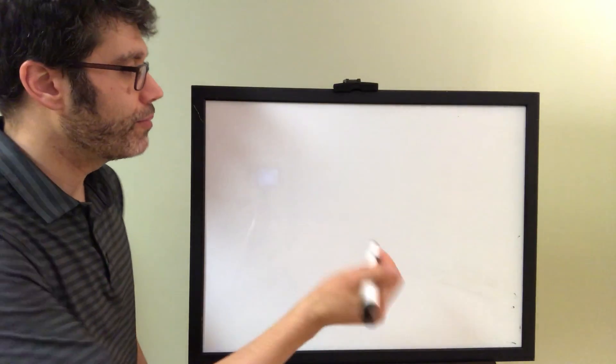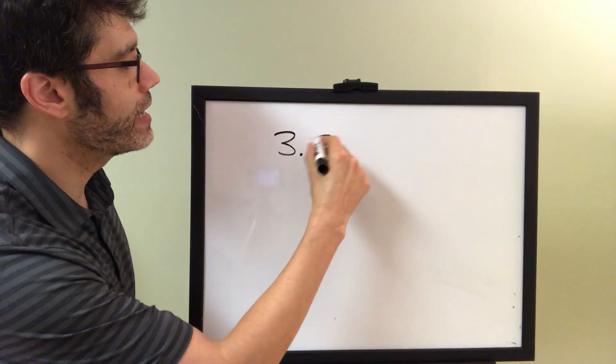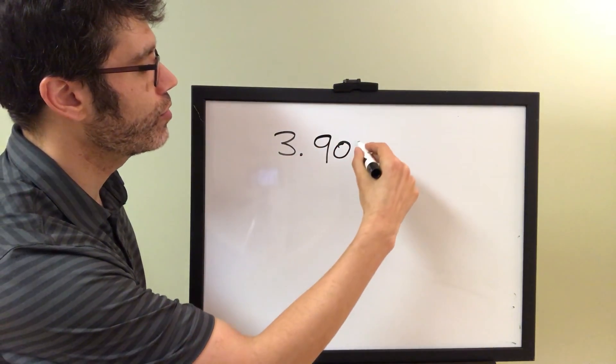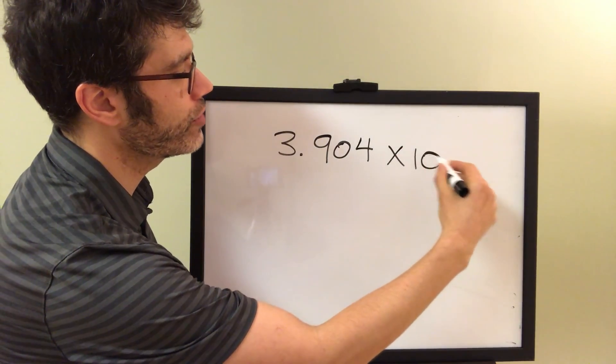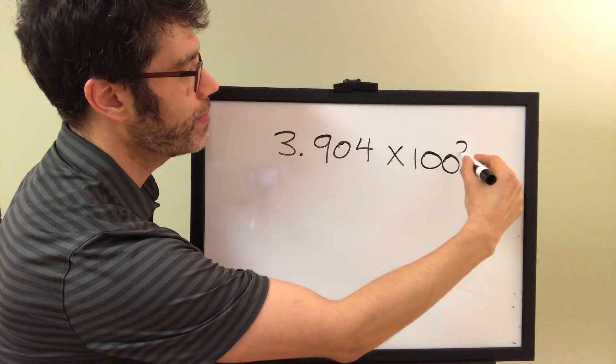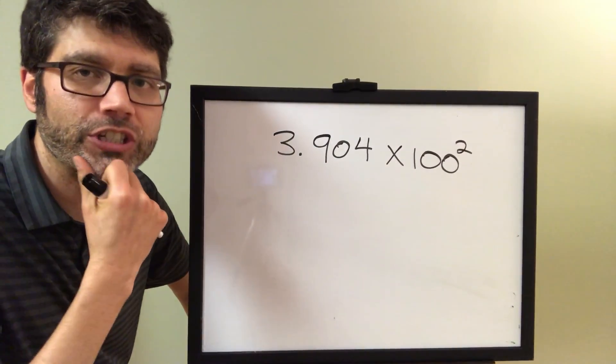All right, let's do another example. What if we have 3.904 times, let's say, 100 to the second power? How is this not in scientific notation? Let's just think about that.